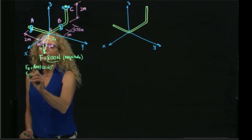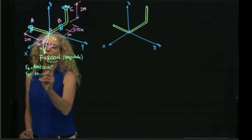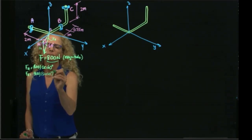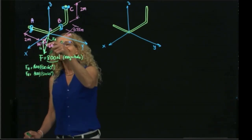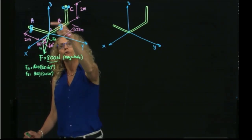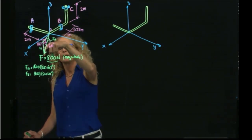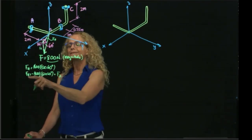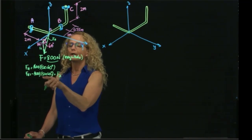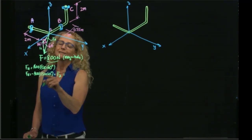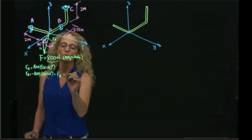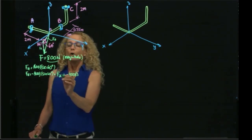Then I have the vertical component, which is 800 sine of 60. The vertical component is parallel to Z in the negative direction. So if I put a negative, I can say already that this is the Z component of my force, which is sine of 60. We know that is square root of 3 over 2, so that will be equal to negative 400 square root of 3.